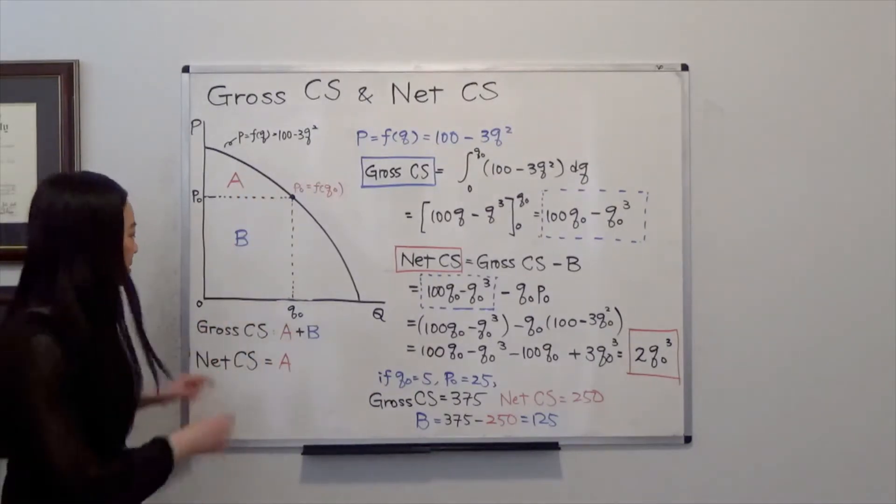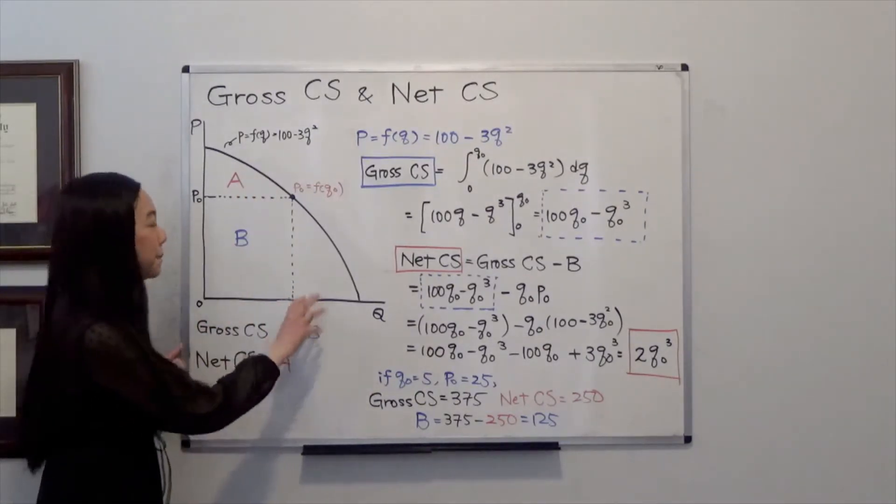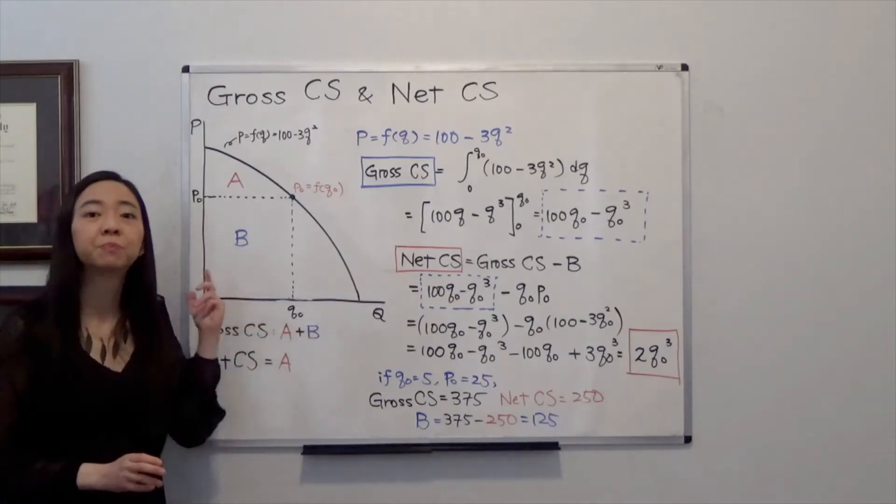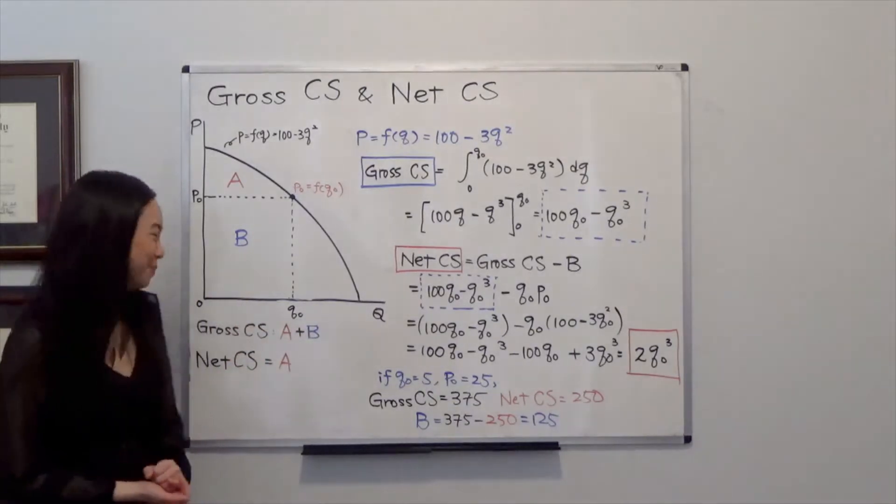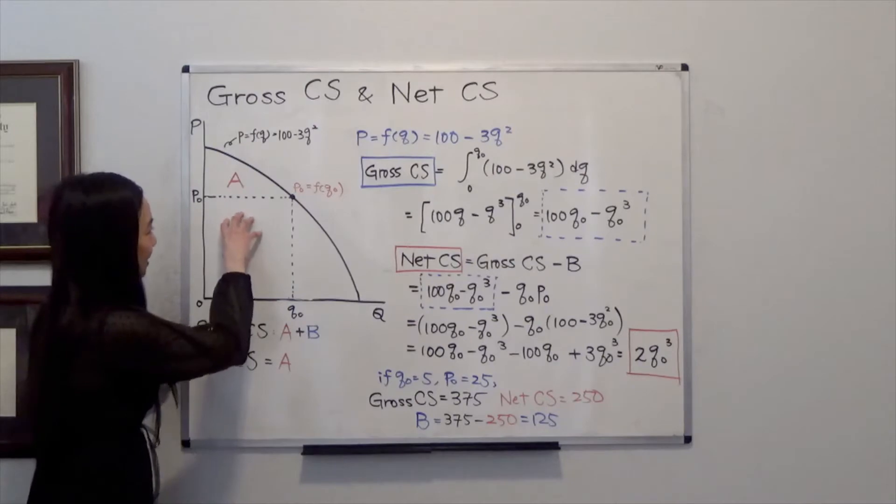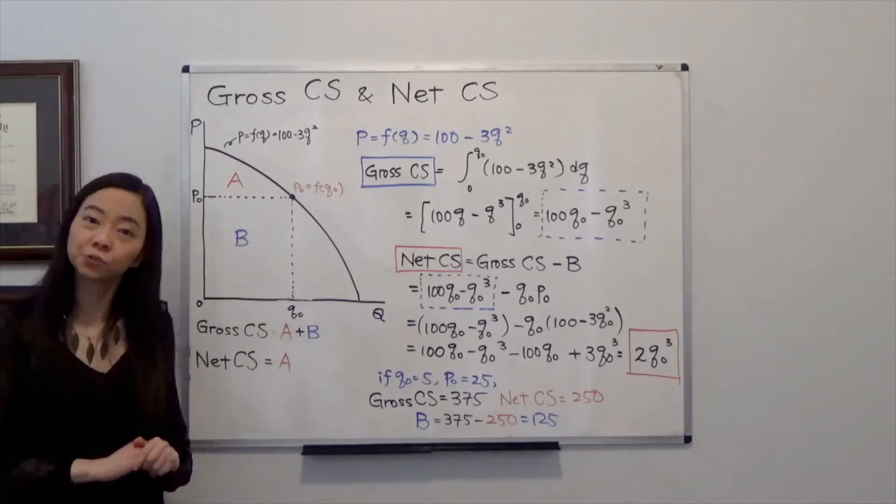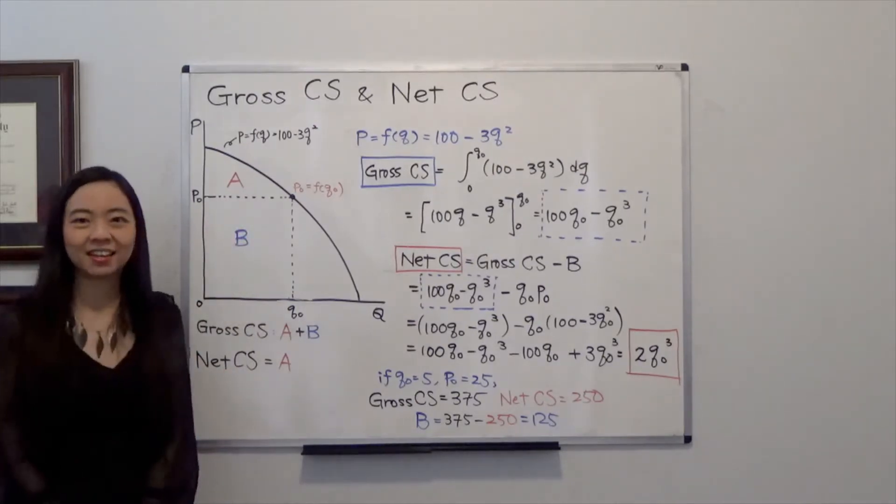which is gross consumer surplus minus the price, the amount of money that you pay to the firm. So it will be subtracting B from the gross consumer surplus, then you get net consumer surplus.